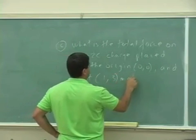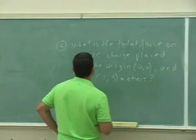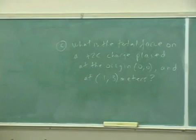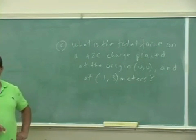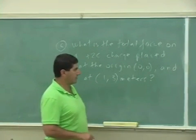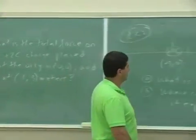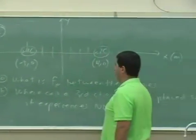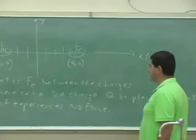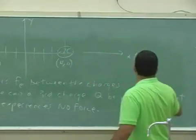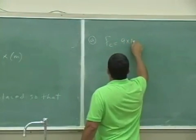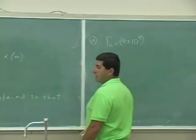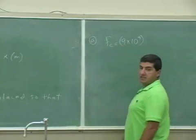For part C, a third charge Q is placed at the origin (0,0) and at (1,3) meters — what is the total force on the plus two Coulomb charge? Let's analyze this. We have two charges placed at negative three zero and four zero. For part A, what is the electrical force between them? That should be pretty straightforward.